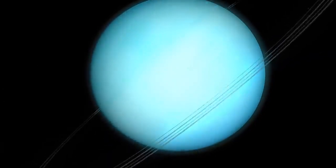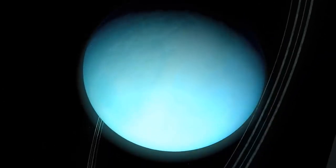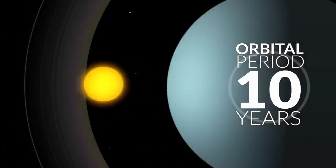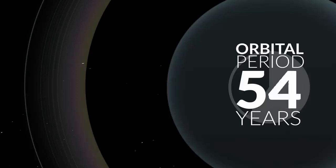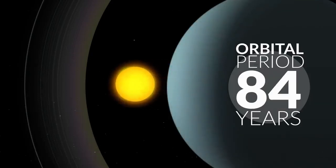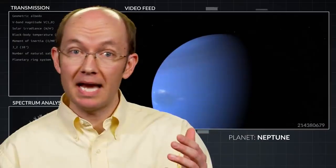Since the planet rotates in this sideways fashion, each hemisphere experiences constant daylight one half of its orbit, which totals 84 Earth years.